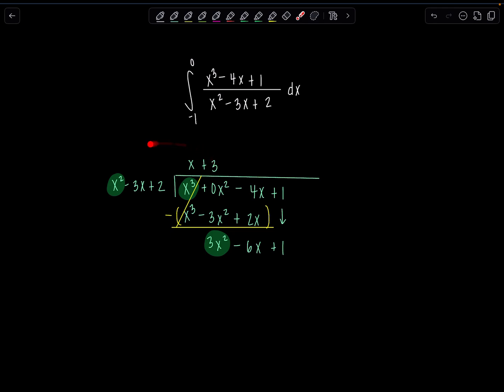And then again, distribute that 3 through the divisor. List it right underneath here. So that'll be 3x squared minus 9x plus 6. And then again we subtract. This cancels out as it should. Negative 6x minus negative 9x is positive 3x, and then 1 minus 6 is negative 5. Now this right here is our remainder.